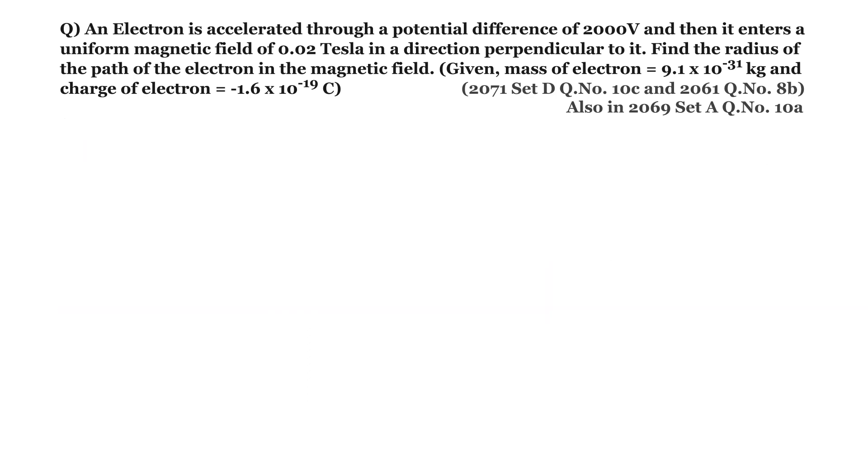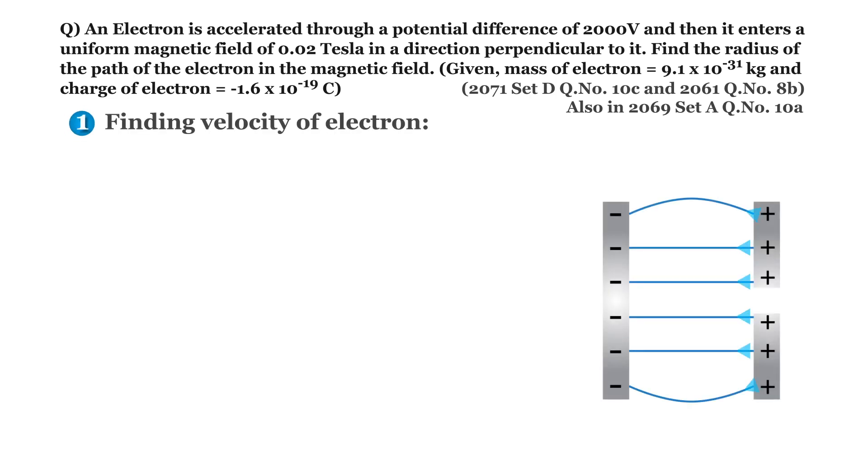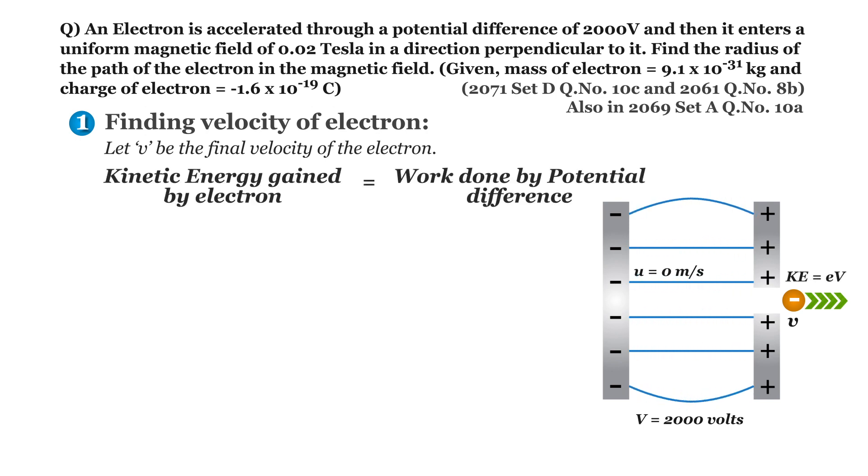Now let's execute our plan and solve the problem. Number 1: An electron which is initially at rest is accelerated through potential difference of 2000 volt. Let small v be its final velocity. Now how can we find its final velocity? We know that in our case, kinetic energy gained by electron is equal to the work done by potential difference.